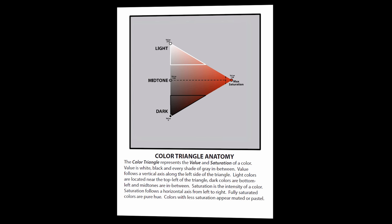Saturation is the intensity of a color. Saturation follows a horizontal axis from left to right. Fully saturated colors are pure hue. Colors with less saturation appear muted or pastel.